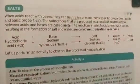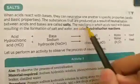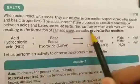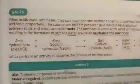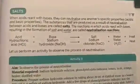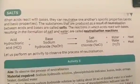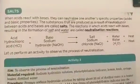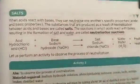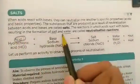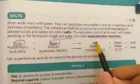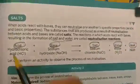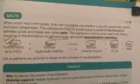The substances produced as a result of neutralization between acid and bases are called salts. The reaction in which acid reacts with base resulting in the formation of salt and water is called a neutralization reaction. In the general form: acid + base → salt + water + some amount of heat. So this is the general form of the neutralization reaction.